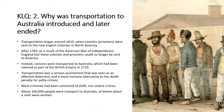Our second key question is about transportation to Australia. We need to be really clear about this — you've already studied this topic when we were thinking about North America. Going back to 1610, convicts, that's prisoners, were being sent to the new English colonies in North America. Your assessment for the autumn term was based on the question of why it was introduced. We'll come back to that at the end of the lesson.